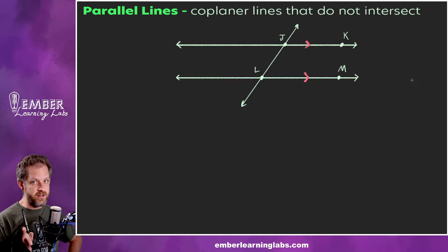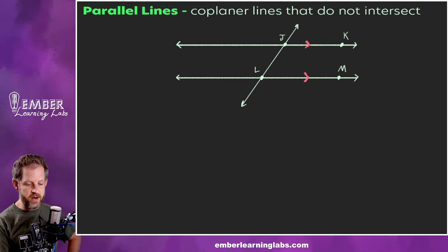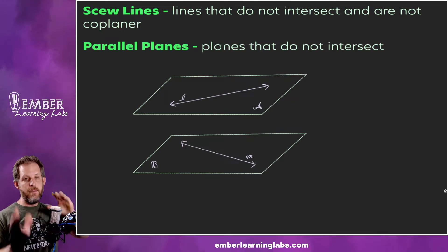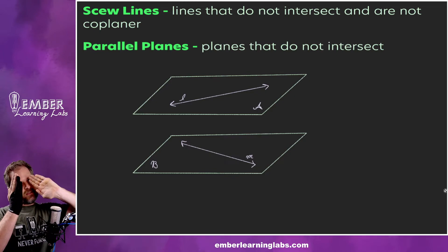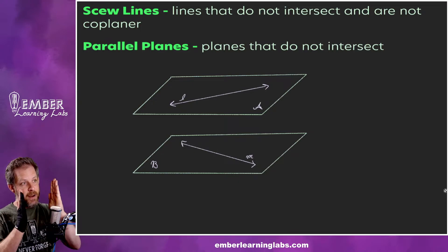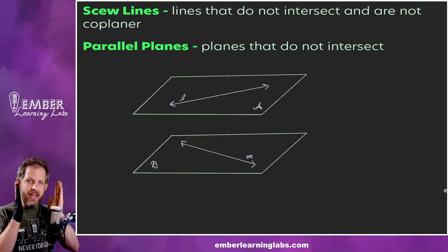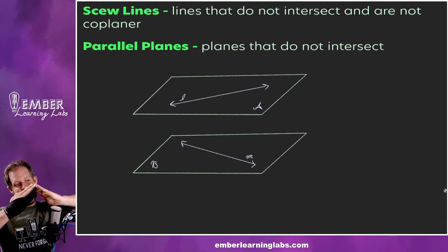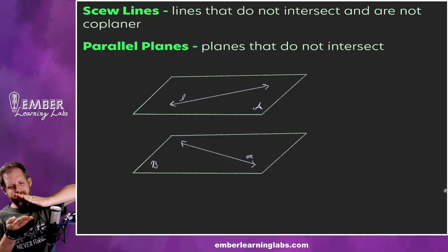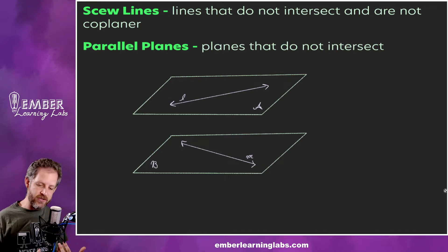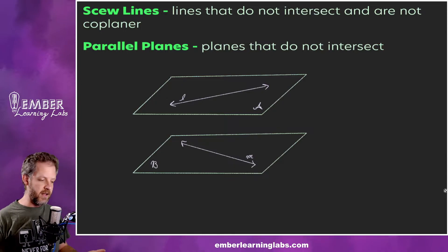Not all lines that never intersect are parallel. A line that doesn't intersect but is also not parallel would be called a skew line. Skew lines are lines that don't intersect but they're not on the same plane. If you take two lines and twist them so they're on two separate planes, they're still never going to touch, but they are not coplanar — those are called skew lines. Parallel planes are planes that never intersect.